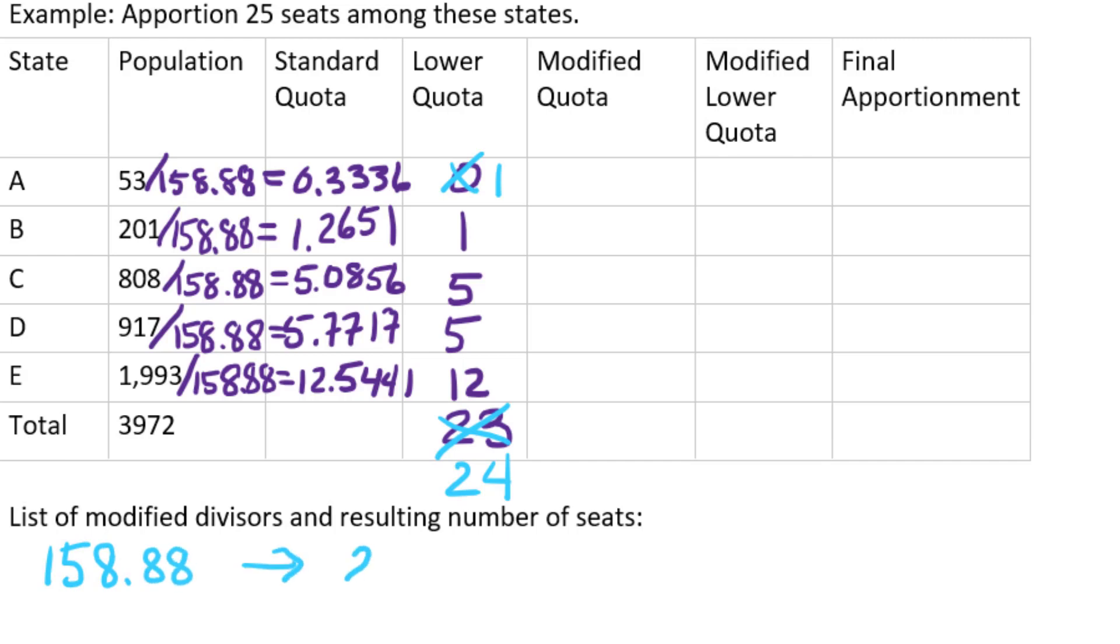Originally, our standard divisor was 158.88, and we just found that that resulted in apportioning 24 seats to the states. Now, since that's too small, that's too low. So we're going to reduce the divisor.